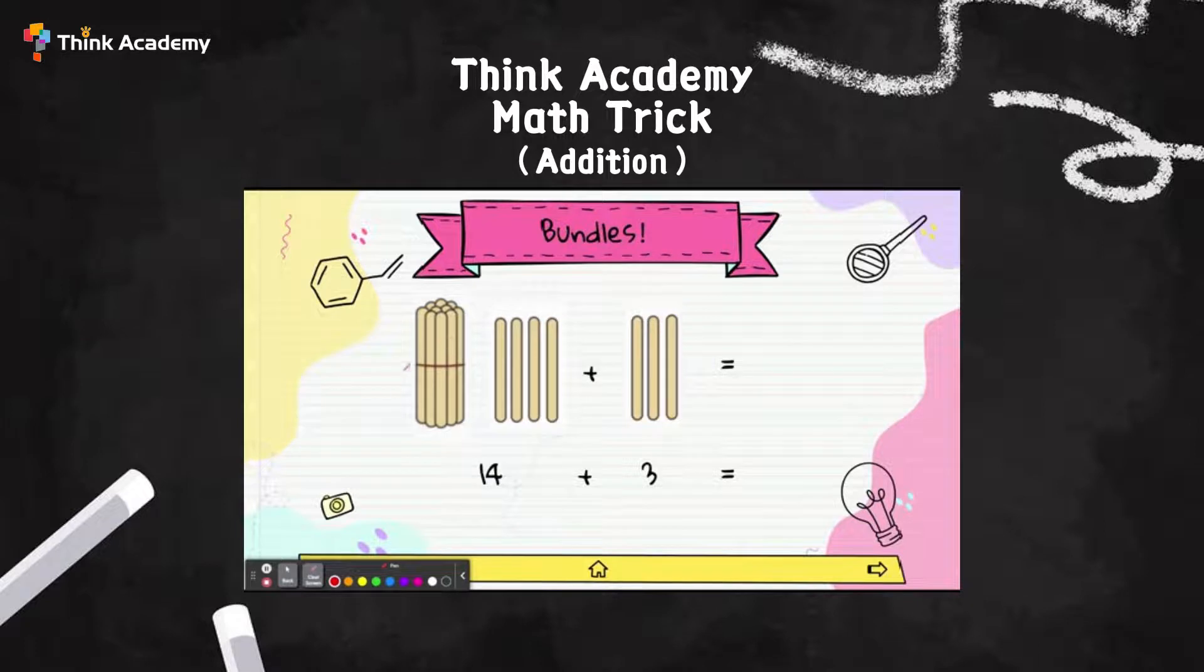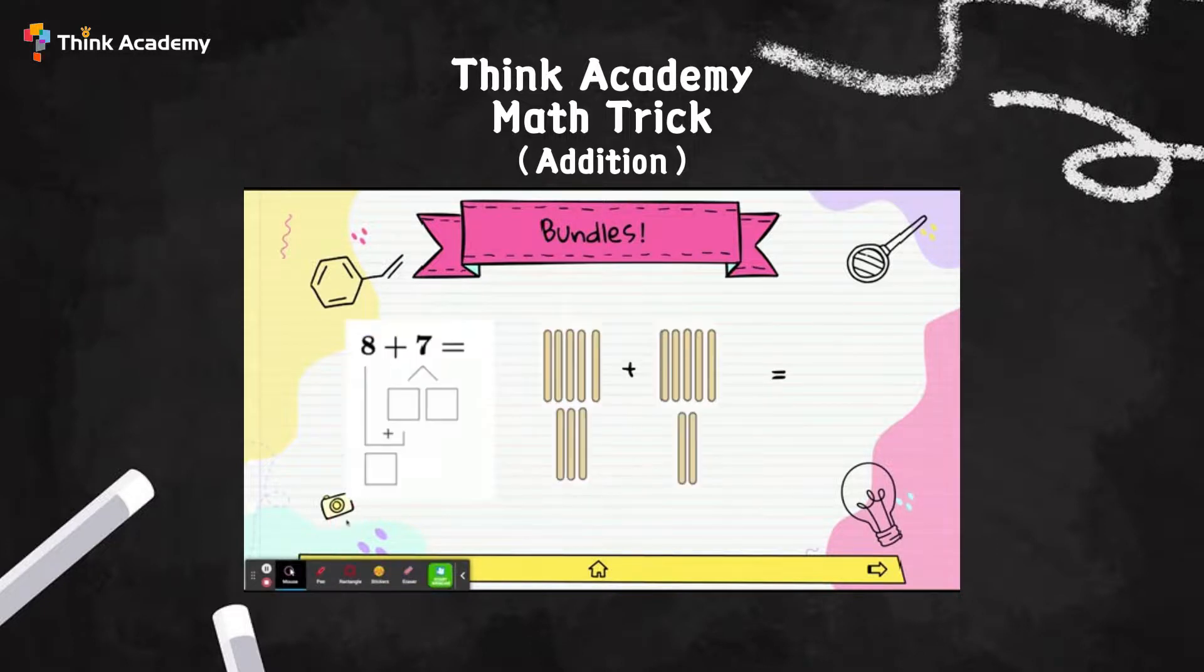Over here I have 4 sticks and 3 sticks. How I bundle is I bundle all the ones together. 4+3 equals 7, and then I add the 10 bundles in the front, that equals 17. So 14+3 equals 17. Now let's see, I have 8+7.